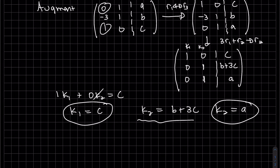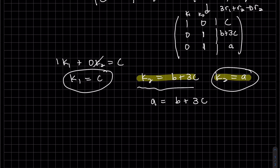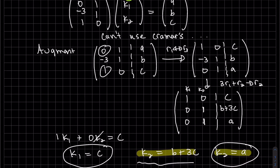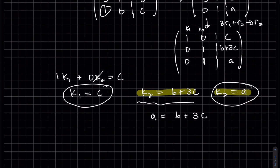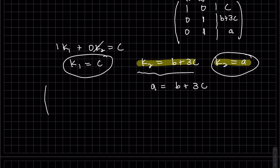But we also have k2 equals b plus 3c, so these are the same thing. How about we set a equals b plus 3c. We were hoping to find k1 and k2 in terms of a, b, and c.